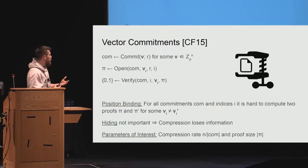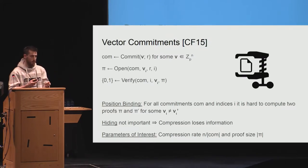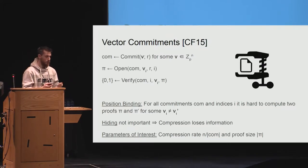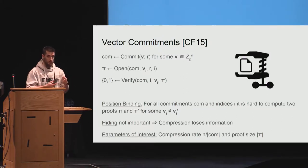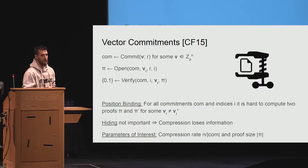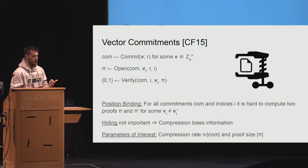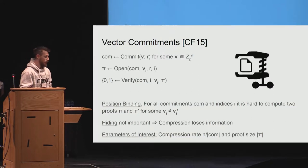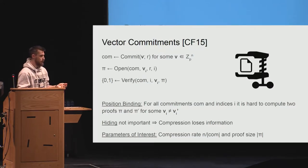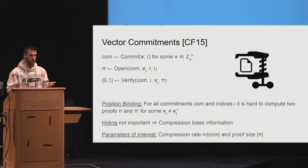A vector commitment allows one to compress a large database into a small digest. There is a commit algorithm that takes as input some randomness R and a vector V, and produces a small commitment com. There is an opening algorithm that takes as input a position, a value at a certain position, the randomness used for the commitment, and produces a short proof that the value of position I was actually V_i. Then the proof can be used by everyone to verify that this is actually the case.